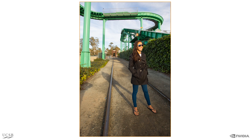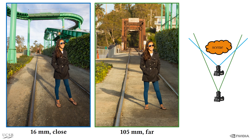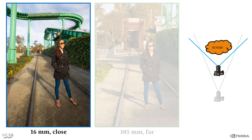Photographers use different image compositions to emphasize different aspects of the scene. For a given scene, two important parameters that control the image composition are the camera position and the focal length of the lens. The interplay of these parameters affects the resulting image in fundamental ways. This image was captured using a short focal length lens of 16mm while the photographer was standing close to the person in the foreground.